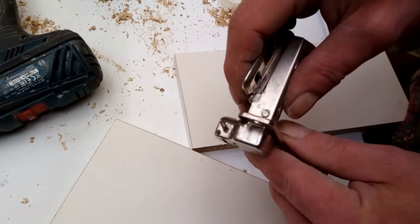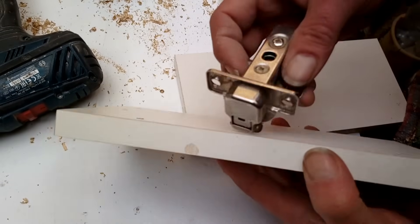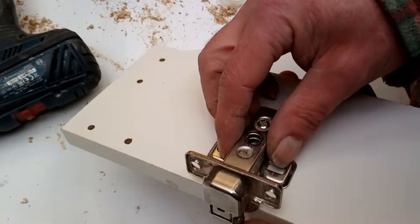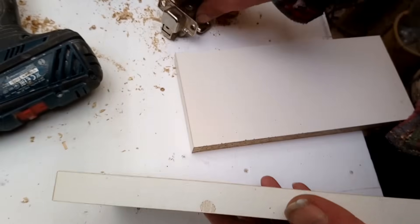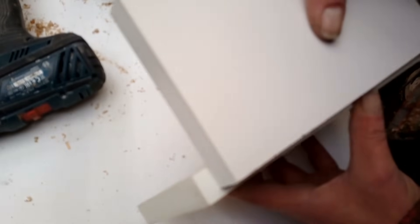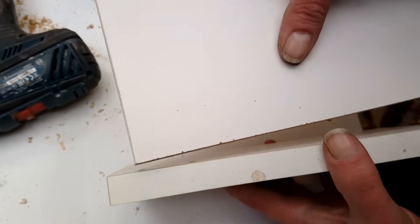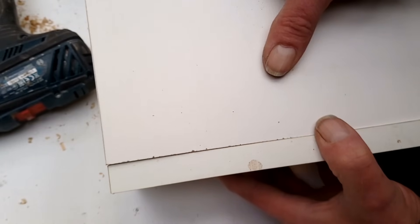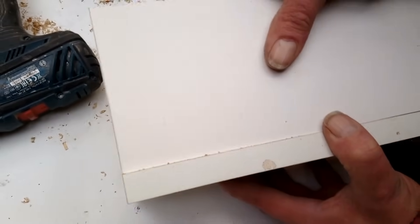Right, these are overlay hinges which means they sit on the side of the cabinet like that and the door would overlay the face. It would open. There's another type, inset, where the door would sit inset.